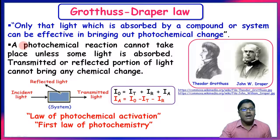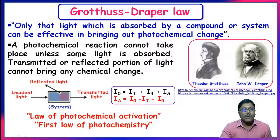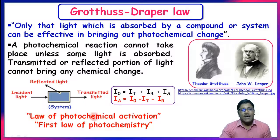Grotthuss-Draper's law: only that light which is absorbed by a system can be effective in bringing about a photochemical change. When light is incident on a system, some portion is absorbed, some is reflected, and some is transmitted. Only the absorbed light will bring about any chemical change. This law is also known as the law of photochemical activation or the first law of photochemistry.